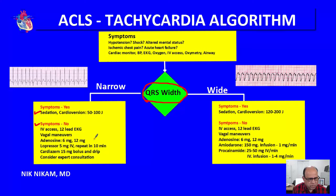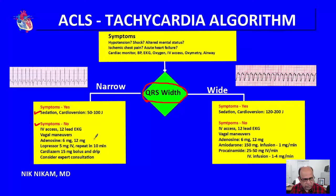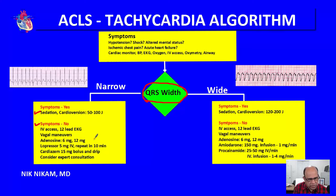If adenosine doesn't work in three to five minutes, try 12 mg of adenosine. If that still doesn't work, we have other options such as beta blockers — you could use metoprolol 5 mg IV as a bolus, repeating every five to ten minutes as needed to bring the heart rate down.